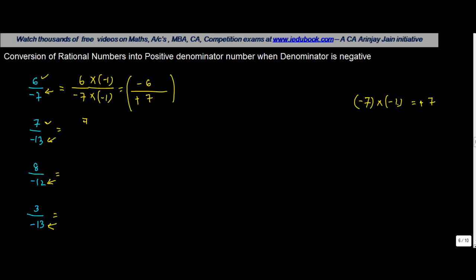Similarly, you can apply the same rule to this one as well. 7 into minus 1, divided by minus 13 into minus 1. Same formula, same application. Minus into minus is plus, 13 into 1 is 13. 7 into minus 1 is minus 7.